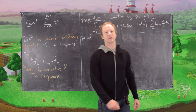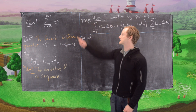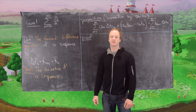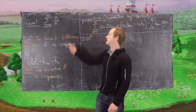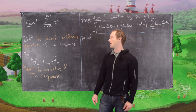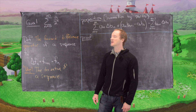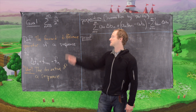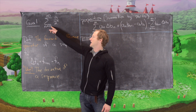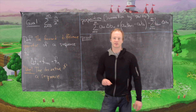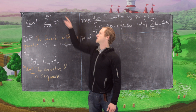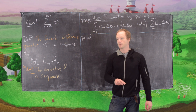Our goal in this video is to calculate the sum from n equals 0 to infinity of n over 2 to the n, a few different less common ways. Before we get started, I want to point out that this sum starting at 0 is the same sum as the sum starting at 1, because the first term here is 0.